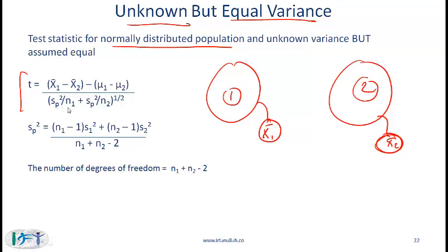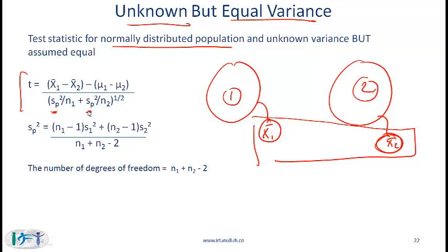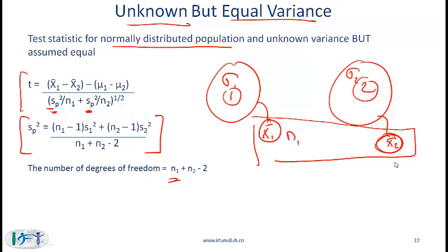sp is the variance computed based on the two samples. Since we are assuming equal variance, there needs to be one number for the variance. We don't know the population variance in either case, therefore we compute the variance from the samples — that's why you'll notice S here. The way you compute the sample variance is given by this formula. The number of degrees of freedom is N1 plus N2 minus 2.